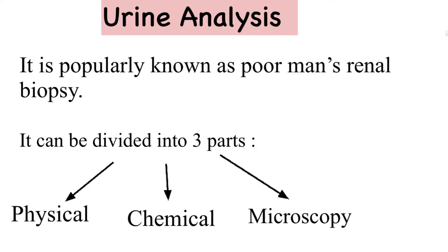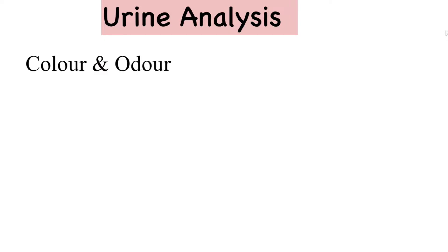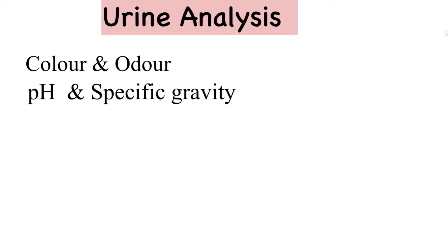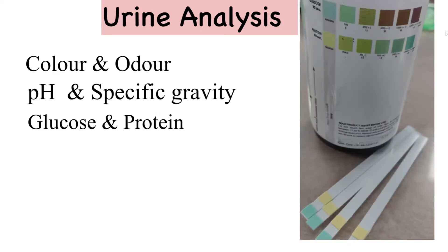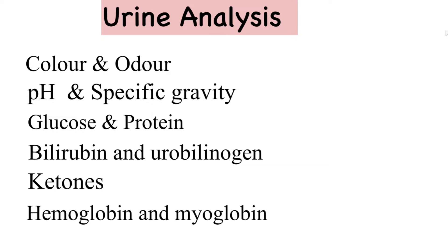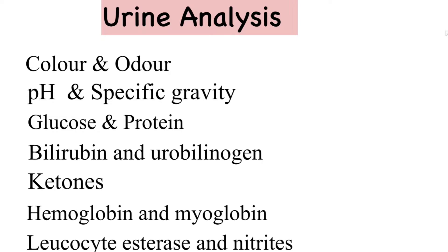Urine analysis predominantly comprises of examination of the color and odor of the urine, pH and specific gravity, glucose and proteins in the urine, bilirubin and urobilinogen, ketones, hemoglobin and myoglobin, and leukocyte esterase and nitrite test.